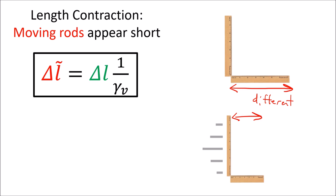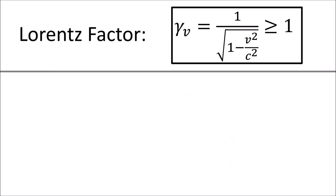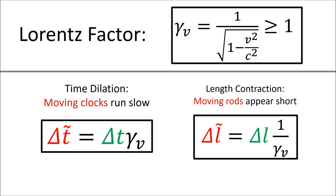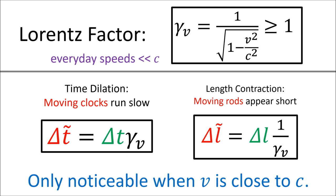However, length contraction only happens in the direction of motion. In the direction perpendicular to the motion, no length contraction happens, and identical rods will be measured to have the same length. So we now see that time and space are relative quantities that depend on the reference frame that we're in. But this definitely doesn't match up with our everyday experiences. Well, the everyday speeds of cars, trains, and planes are much smaller than the speed of light c. And we see in the Lorentz factor formula that if the speed of the reference frame v is much smaller than the speed of light c, then v squared over c squared is basically zero, meaning that the Lorentz factor is basically equal to one. This means that all inertial reference frames universally agree on time and space, so the effects of special relativity are not apparent at everyday speeds.